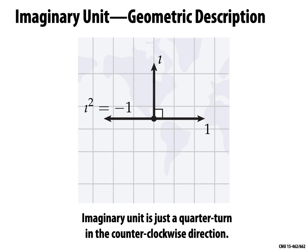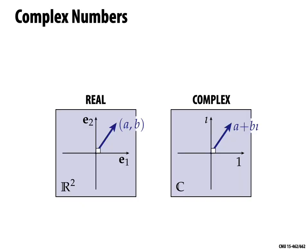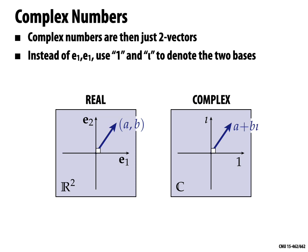So what are complex numbers? Complex numbers are nothing more than two-dimensional vectors. The only change is that instead of using bases like e1 and e2, we're going to give those bases different names — we call them 'one' and 'i'. One is a pseudonym for e1 and i is a pseudonym for e2. We'll make one other small notational change: rather than writing coordinates as tuples (a, b), we write them as a + bi. That means magnitude a in the direction 'one' and magnitude b in the direction i — just like a pair of numbers.